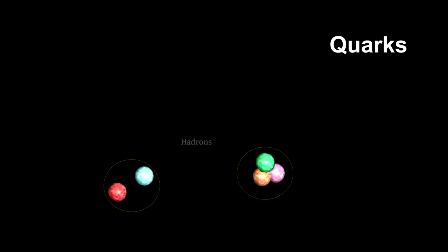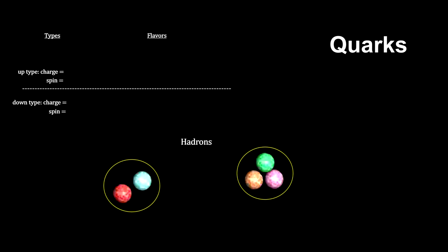We call particles made of quarks hadrons, meaning heavy. In studying hadrons, we find two kinds. Those with two quarks are called mesons, and those with three quarks are called baryons.